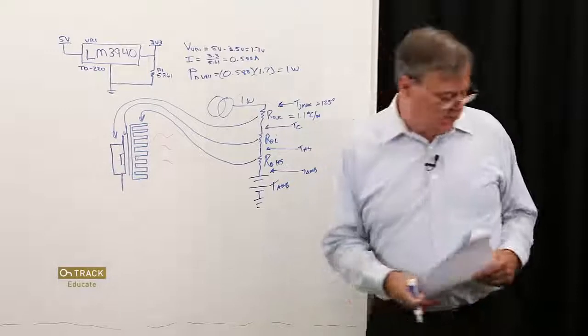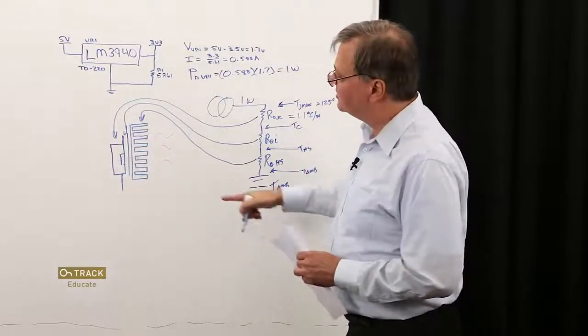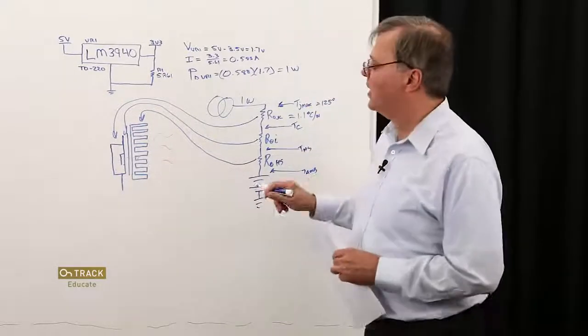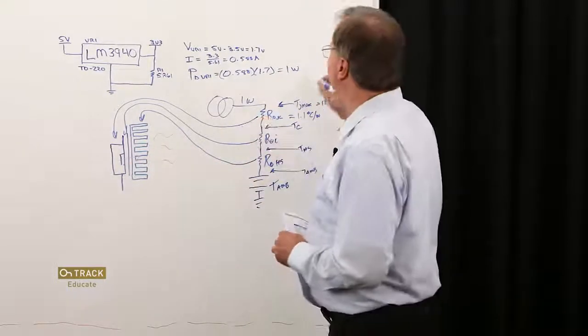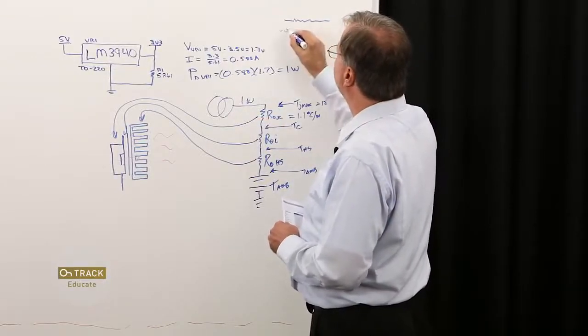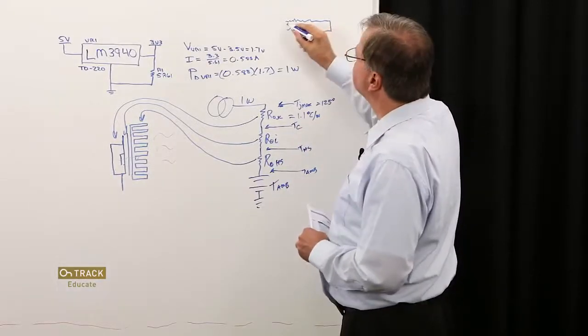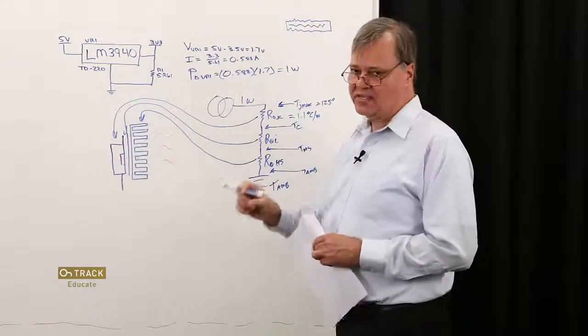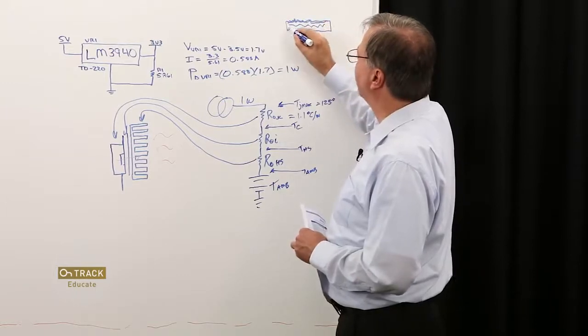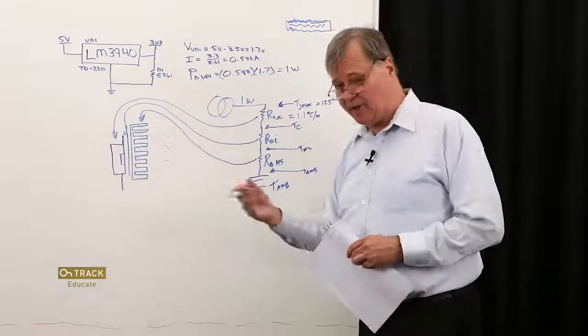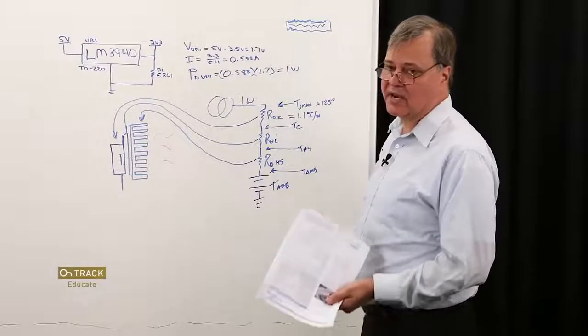The next device in our thermal stack up is the interface. I have a data sheet here for a BergQuest SILPAD. This interface is very necessary in our application. If I were to mount the TO220 package directly to the heat sink, I wouldn't get a lot of thermal contact. And that's because the surfaces of these two metal objects are not uniformly flat. They actually have some roughness to them. What the thermal interface does is it provides a material to fill this gap that has a known thermal resistance, and it yields to fill in all of the little gaps along this interface on both sides. So, if I didn't have that, then I would have to somehow integrate over these two unknown surfaces to figure out what the surface contact is, and that's going to be different for every application. So, this brings uniformity to our application.